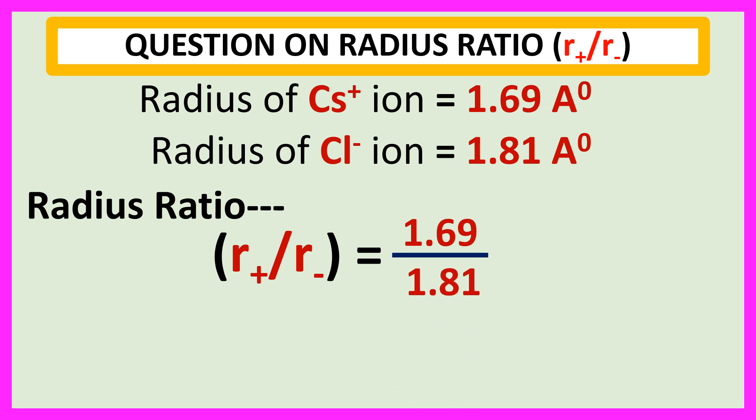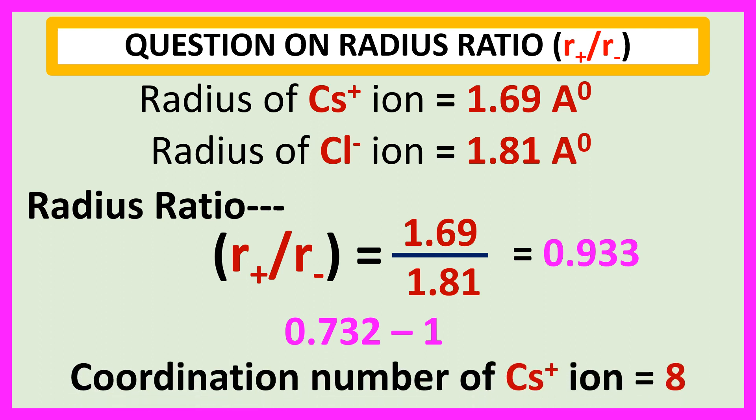This is the radius of Cl⁻ ion is equal to 0.933. This value lies between 0.732 to 1. So, coordination number of Cs⁺ ion is equal to 8.